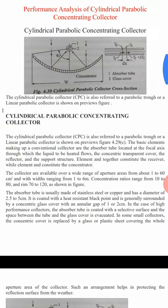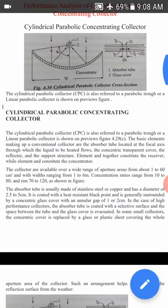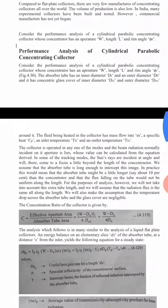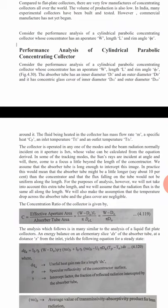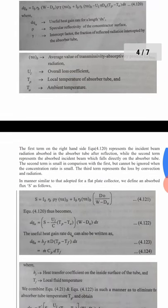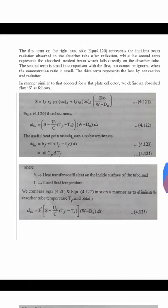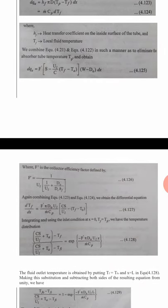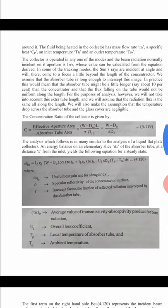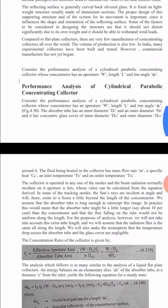We have now discussed the cross-sectional area and structure of the collector. From now we are going to discuss the concentration ratio - what it is and how much energy the balance equation gives us - and what the value of useful heat energy gain, collector efficiency factor, and heat removal factor are. We will derive all these expressions.